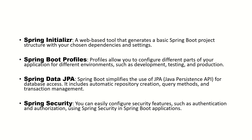The next feature is Spring Data JPA, one of the commonly used features of Spring Boot. Spring Boot simplifies the use of JPA (Java Persistence API) for database access. It includes automatic repository creation, query methods and transaction management. Spring Data JPA provides features that help automatically create repositories and methods like save, find all, find by name, and delete — all automatically created by JPA to help us interact with the database.